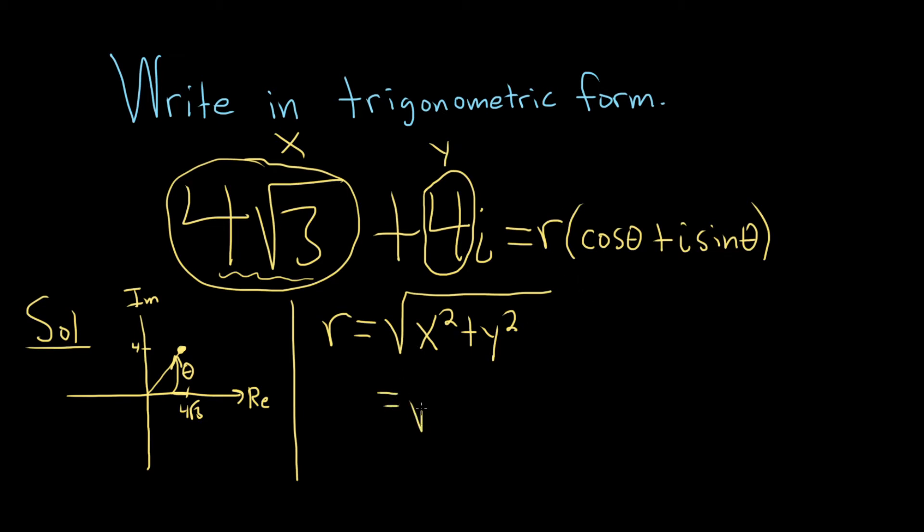So then we have the square root of, so x is 4 square root of 3, and that's squared, and y is 4, and that's also squared. So this is equal to the square root of, when you square this piece, you just square each of the factors. So you would get 16 times, and then the square root of 3 squared is 3, plus, and then here you get 16.